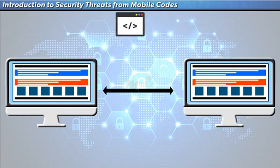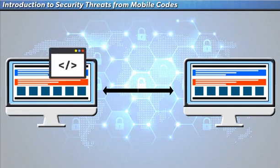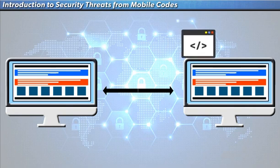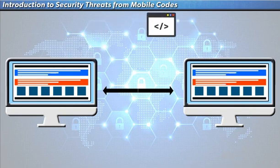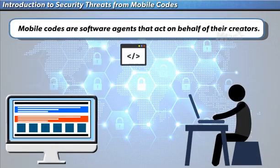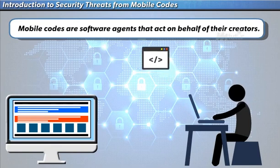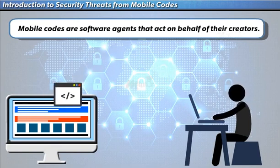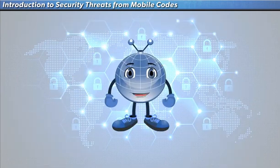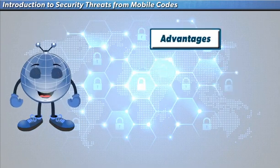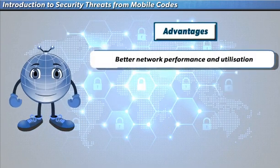Mobile codes are software codes that have the ability to travel from one system to another to do the work assigned to them autonomously. These mobile codes are software agents that act on behalf of their creators.